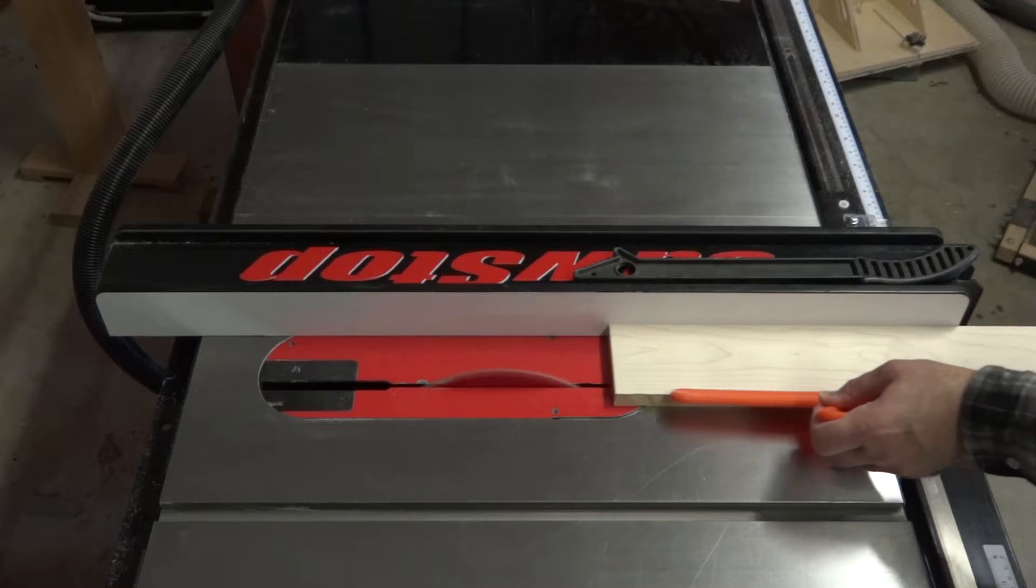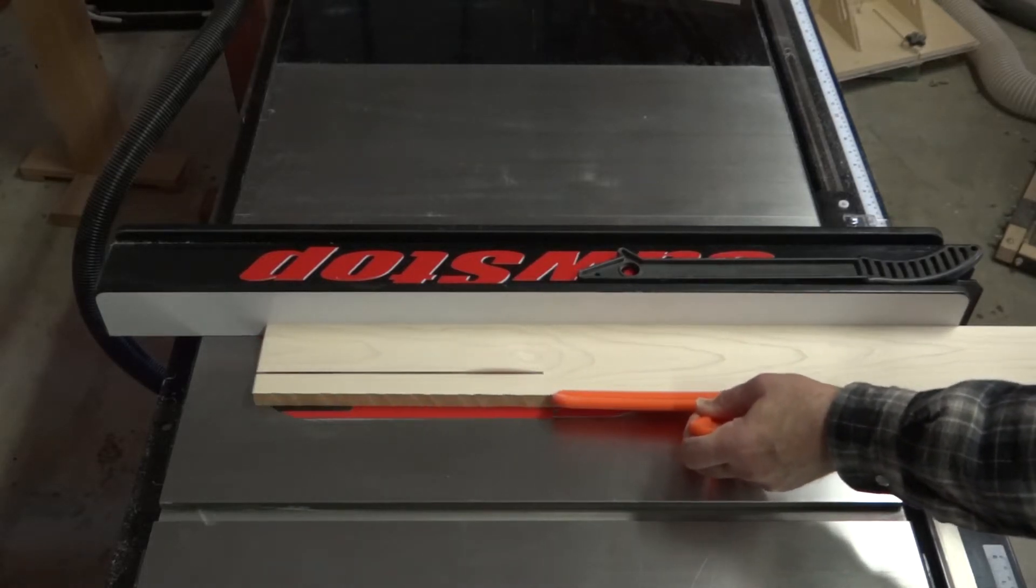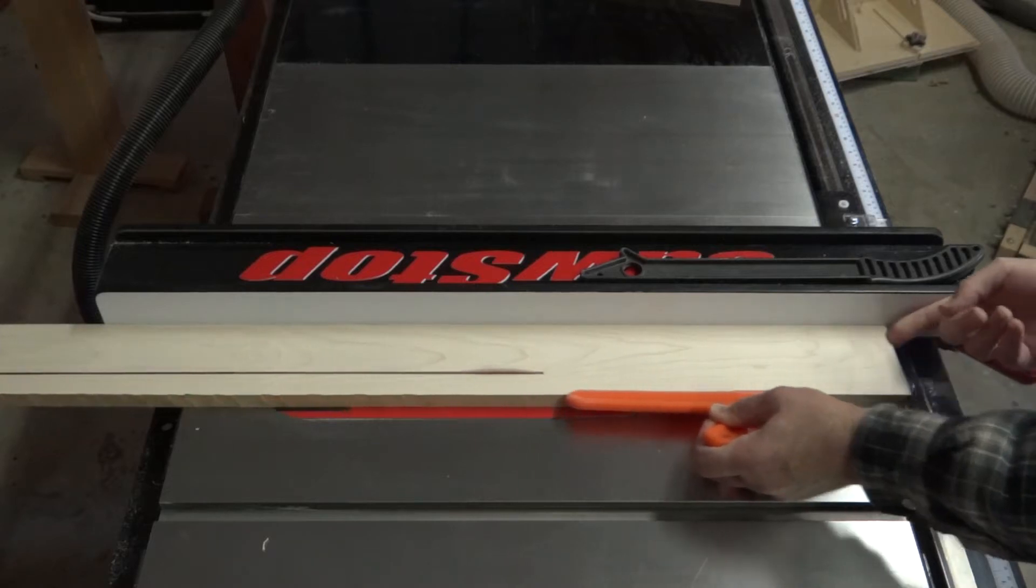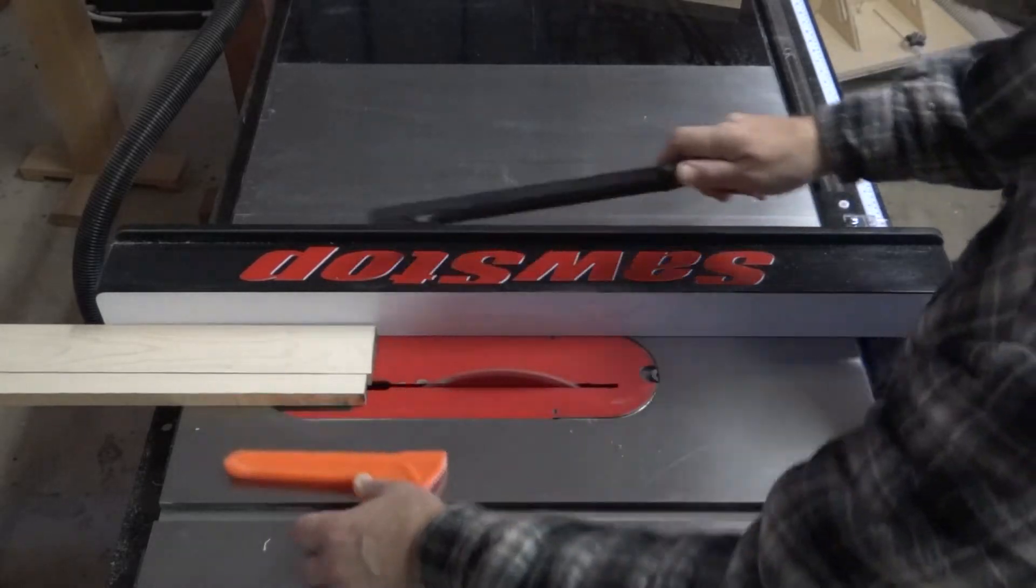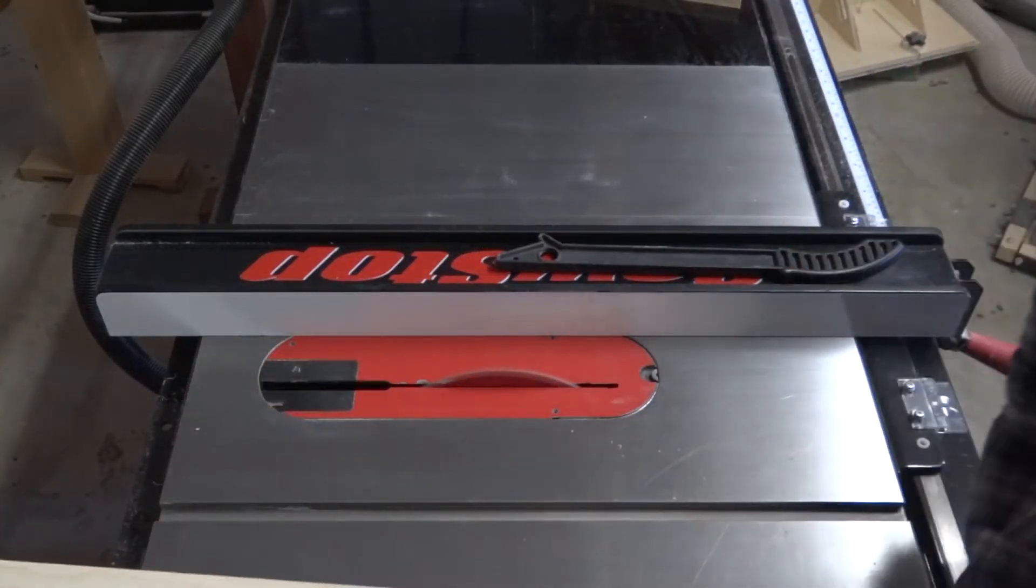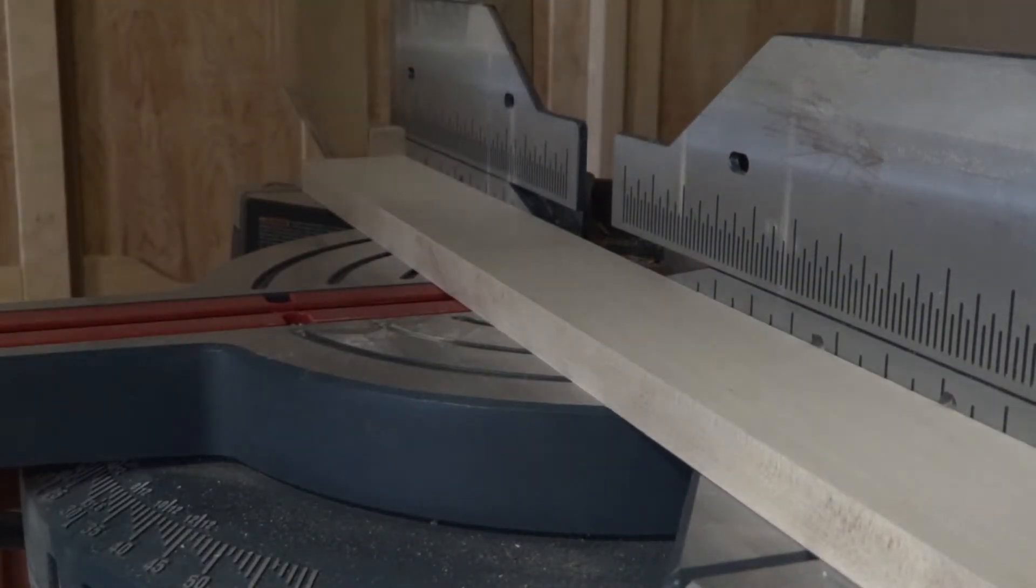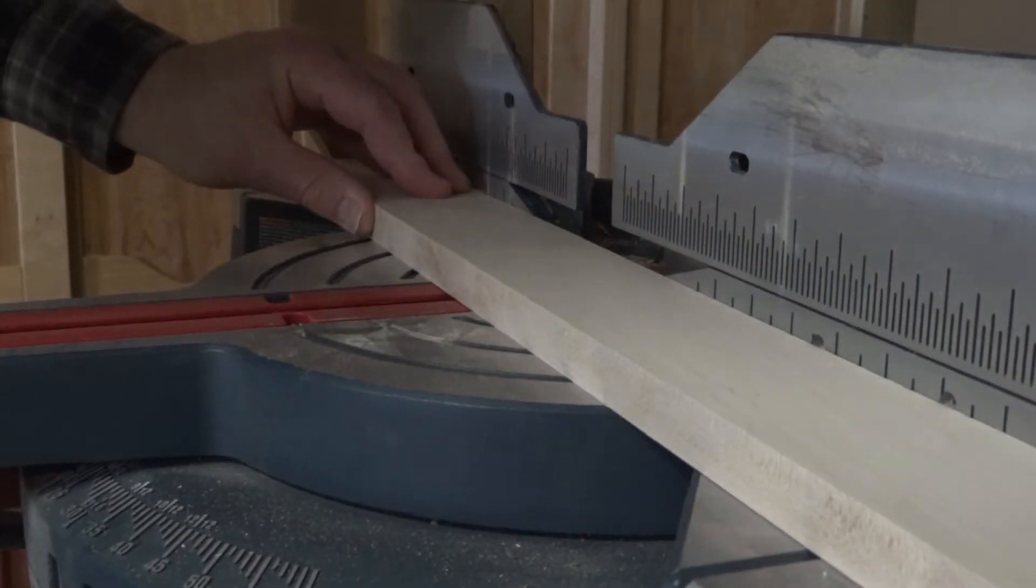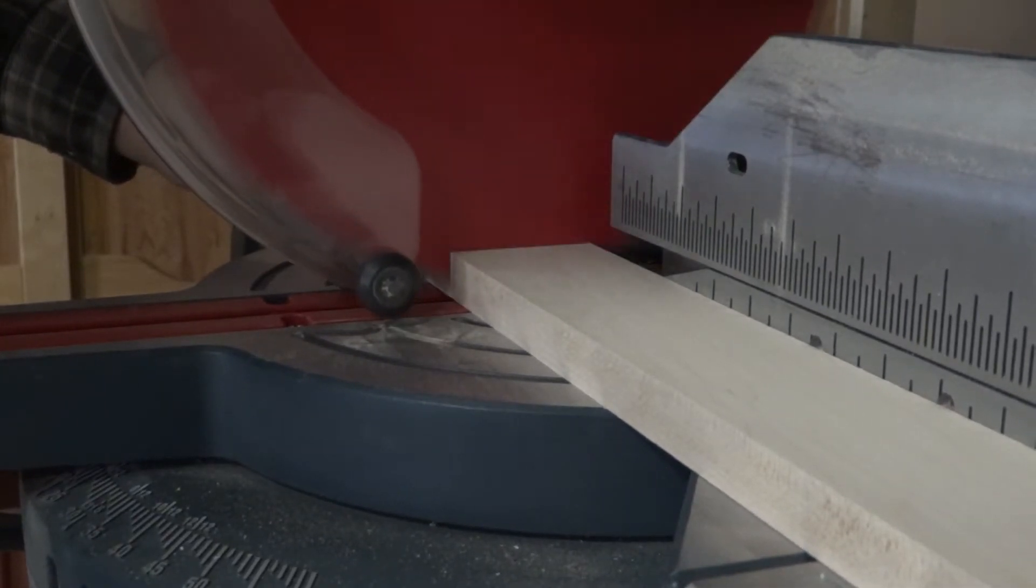I'm ripping a maple board for the segment adjusters. Now I'm cutting the adjusters to length. My sled is 9 inches wide and I'm cutting the adjusters to 11 inches.